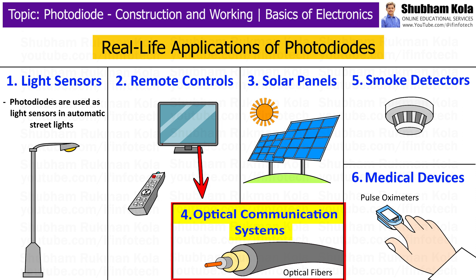The fourth application is optical communication systems. In fiber optic communication, photodiodes are used to detect light signals. These systems send information in the form of light pulses through optical fibers. At the receiving end, photodiodes convert these light pulses back into electrical signals, which can then be processed by computers or other electronic devices.